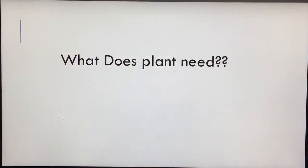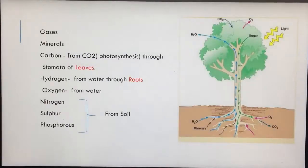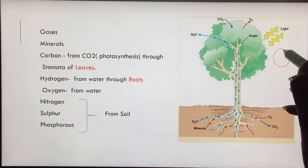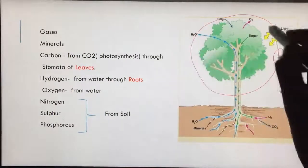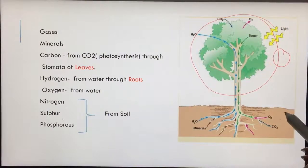So what does a plant need? What are the secret ingredients for making food? They are gases, minerals, carbon, hydrogen, oxygen, nitrogen, sulfur, phosphorus. Out of which gases they get from the atmosphere around them. And minerals come from soil - that is nitrogen, sulfur, phosphorus, all are uptaken from the soil.